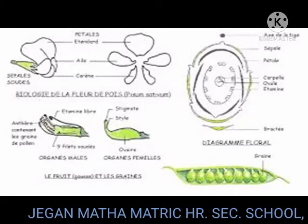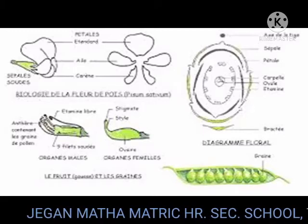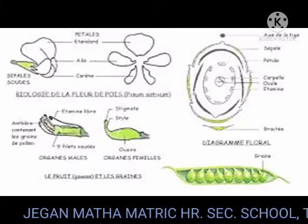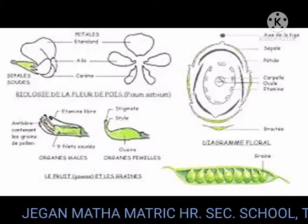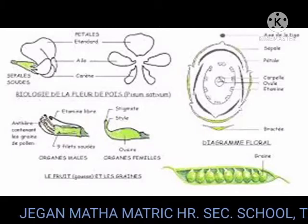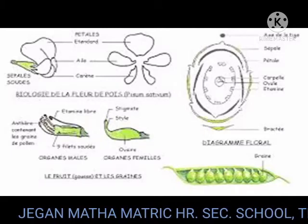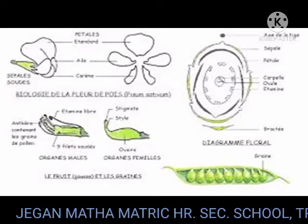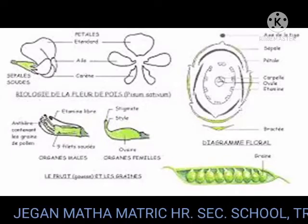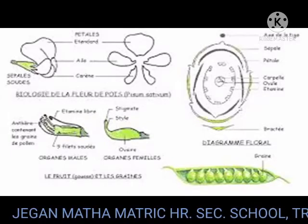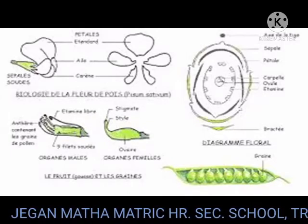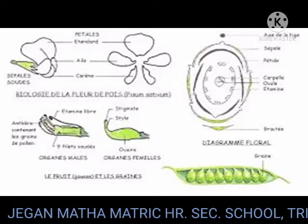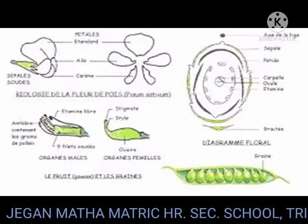Corolla: petals 5, white or blue, apopetalous — the petals are free — irregular and papilionaceous. Corolla showing distinctly imbricate aestivation.